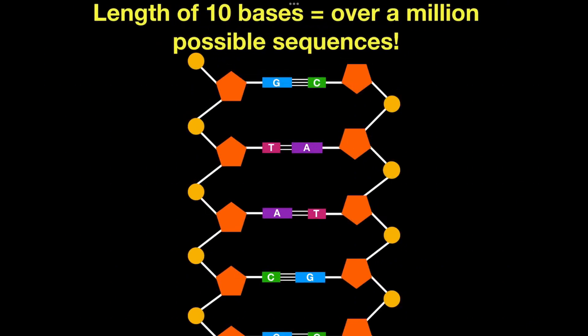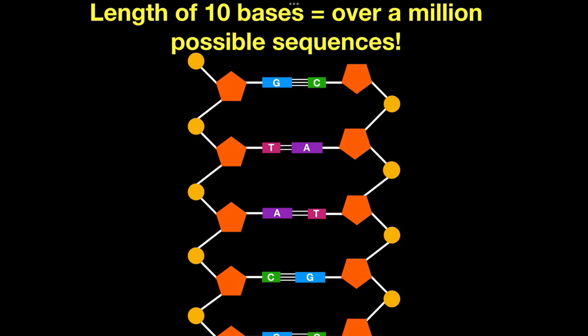You might be interested to know that if the length of DNA is ten bases, that makes over a million possibilities for the sequence of those ten bases. That is certainly a lot of diversity given that we know that DNA is made of many more than ten bases.